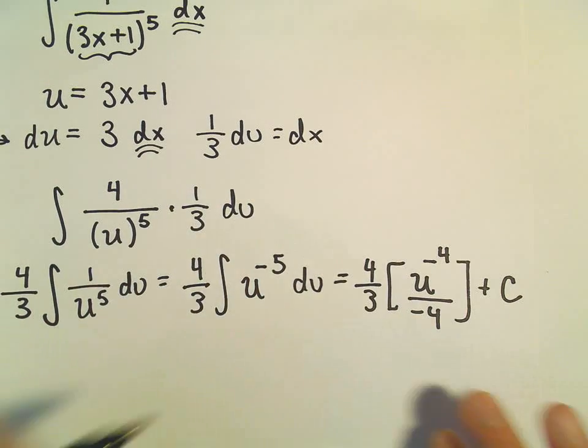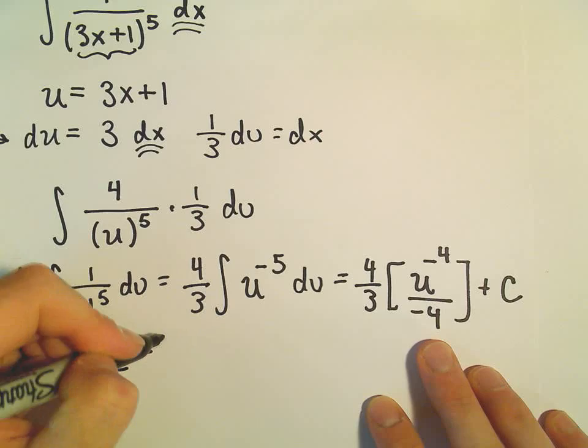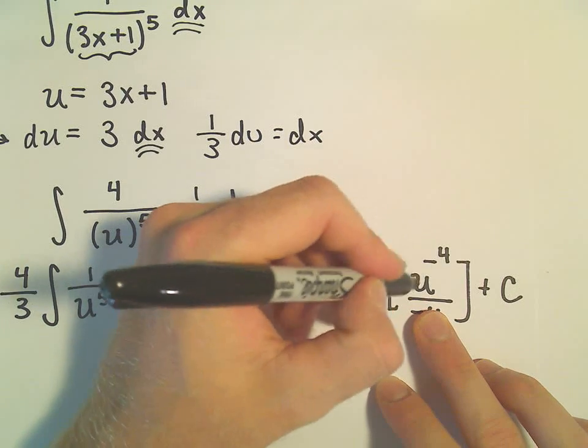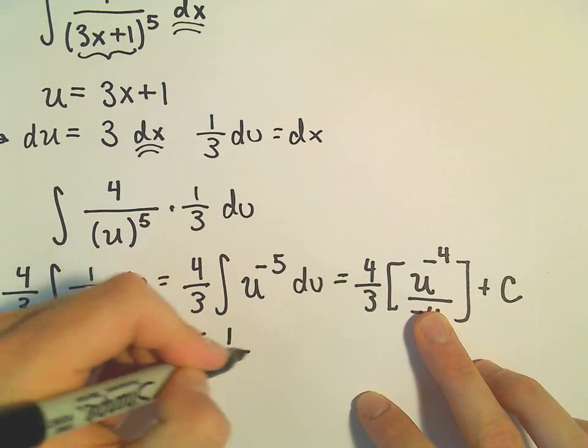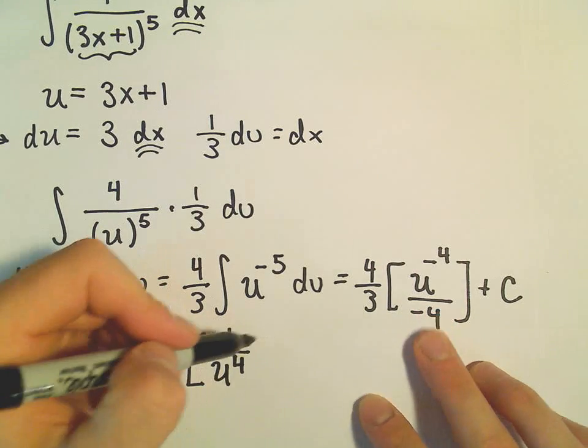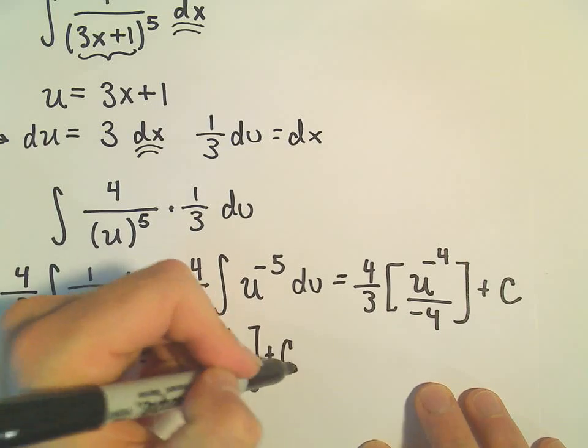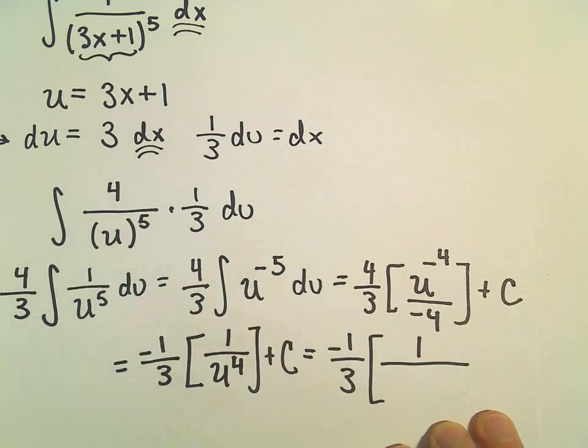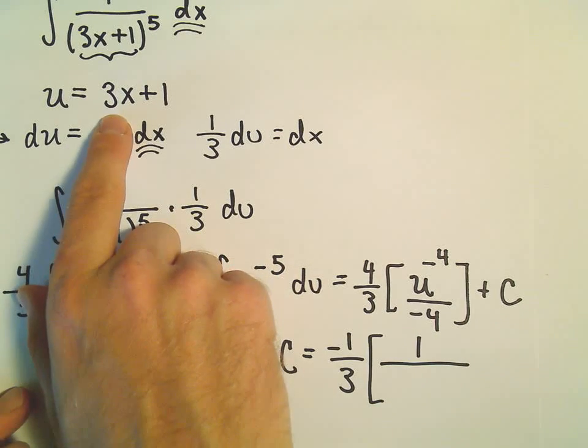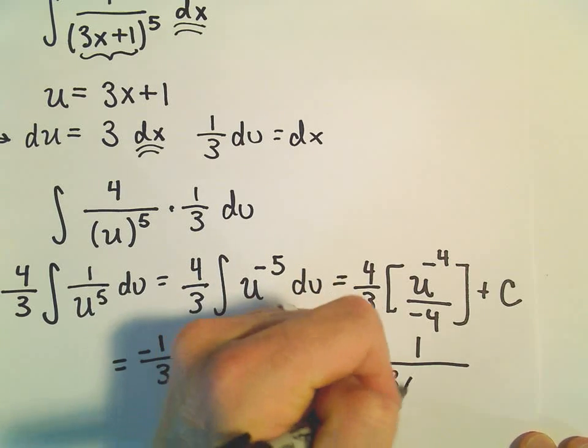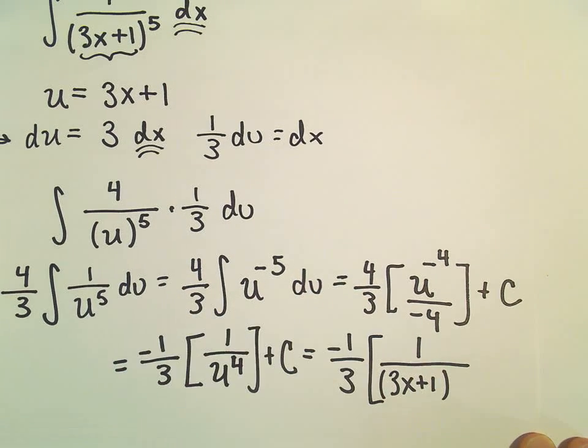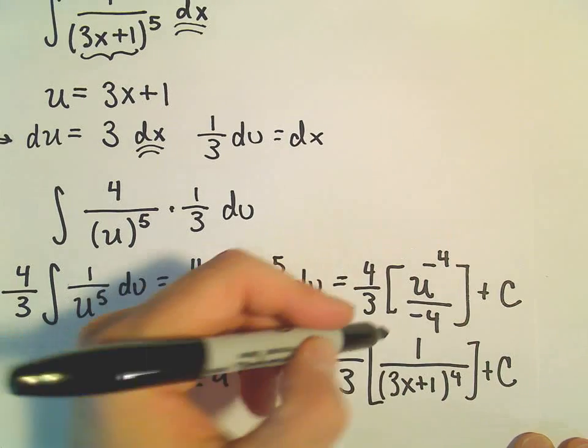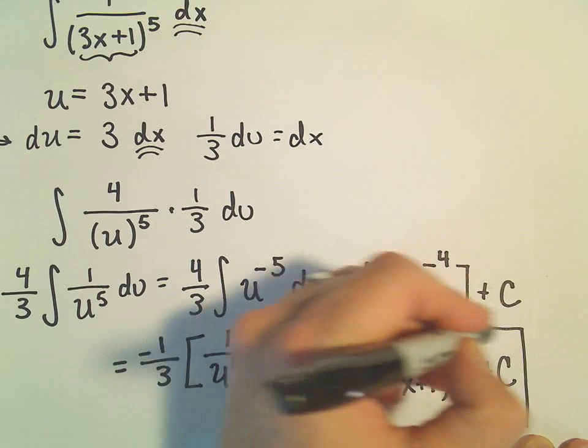But now I'm going to do a couple things. So 4 over negative 4 would leave us with negative 1 over 3. So now inside the brackets, we would just have the u to the negative 4. And I'm going to write that as 1 over u to the positive 4th power, plus c. And last but not least, what we'll do is we'll just replace our u with what we originally picked. So we said u is equal to 3x plus 1. So we'll have 3x plus 1, all raised to the 4th power, plus c. And that will now be our anti-derivative.